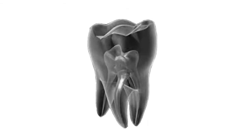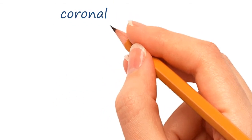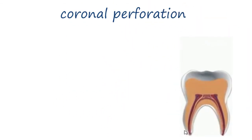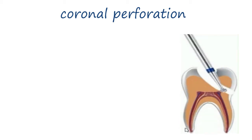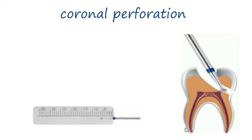Now let's talk about the types of perforation according to site, we'll take it coronoapically. Coronal perforation occurs due to disorientation of used burrs during access opening and locating the canals, mostly in cases of calcified pulp chamber. It could be avoided by evaluating the estimated length to the roof of the pulp chamber, then marking it on the used burr.